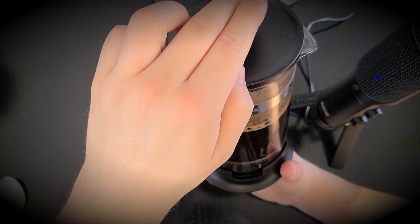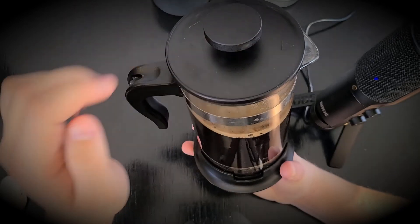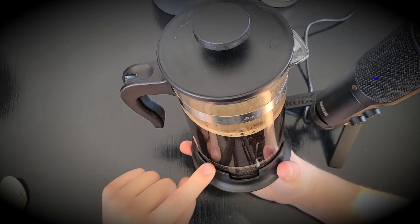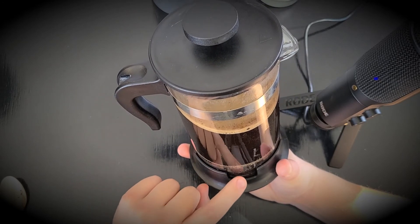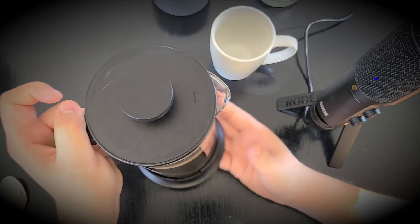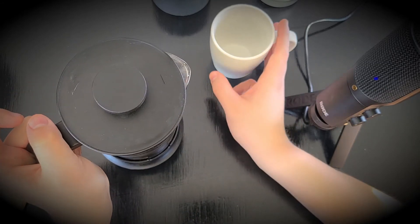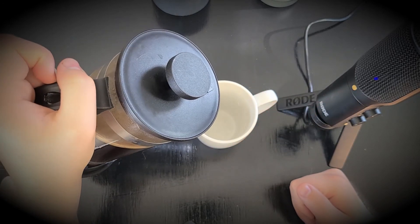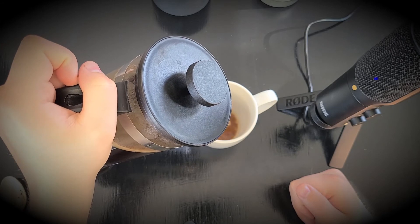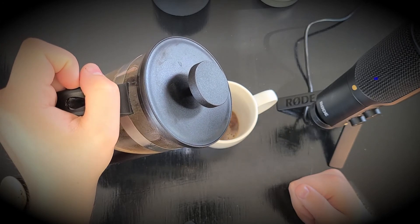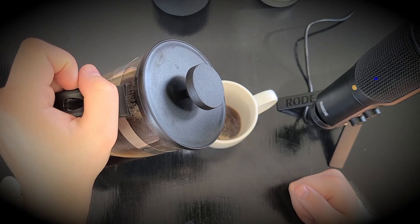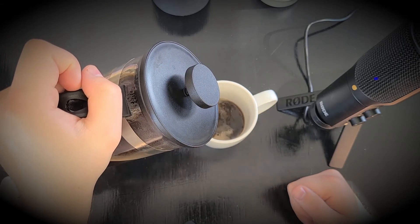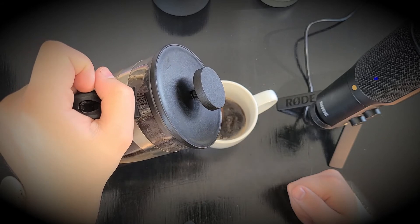You can watch all of those grinds slowly make their way to the bottom. You see them over there? Now our coffee is free of any grinds as they're trapped at the bottom. Now let's pour ourselves a cup.